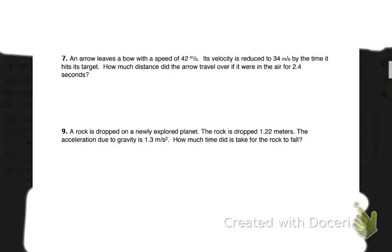Number seven says: an arrow leaves a bow with a speed of 42 meters per second. Its velocity is reduced to 34 meters per second by the time it hits its target. How much distance did the arrow travel if it were in the air for 2.4 seconds?